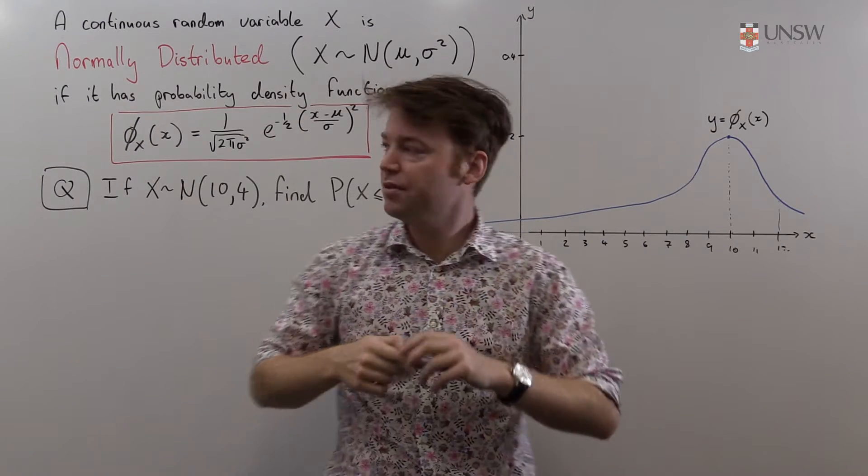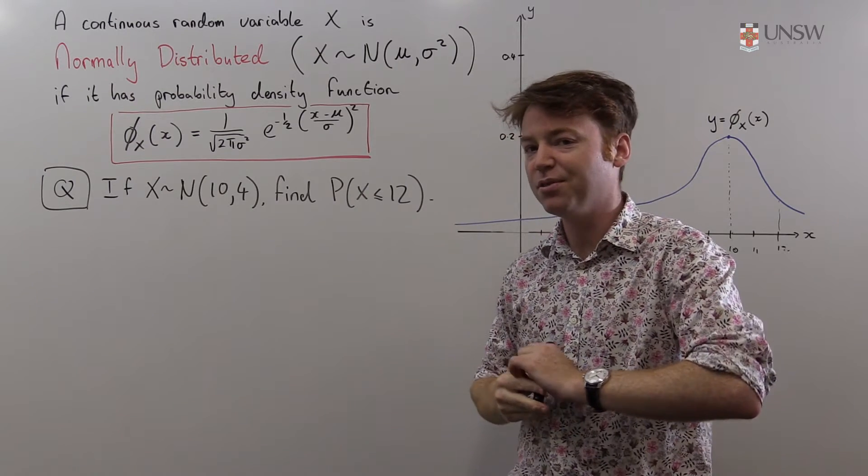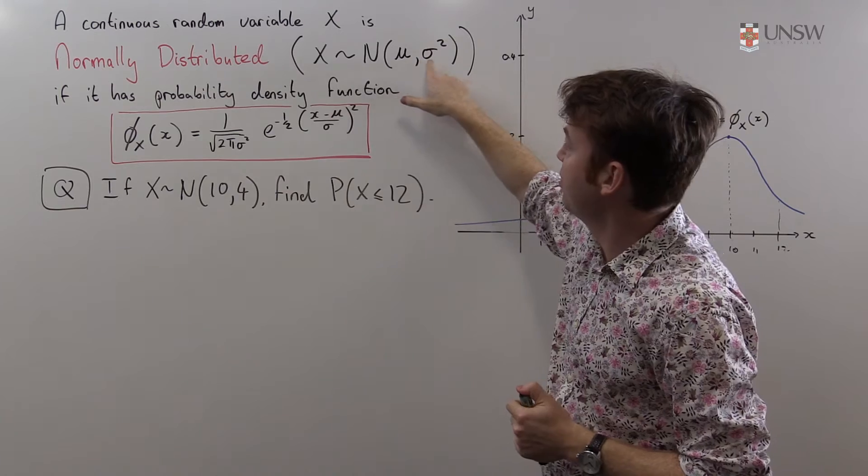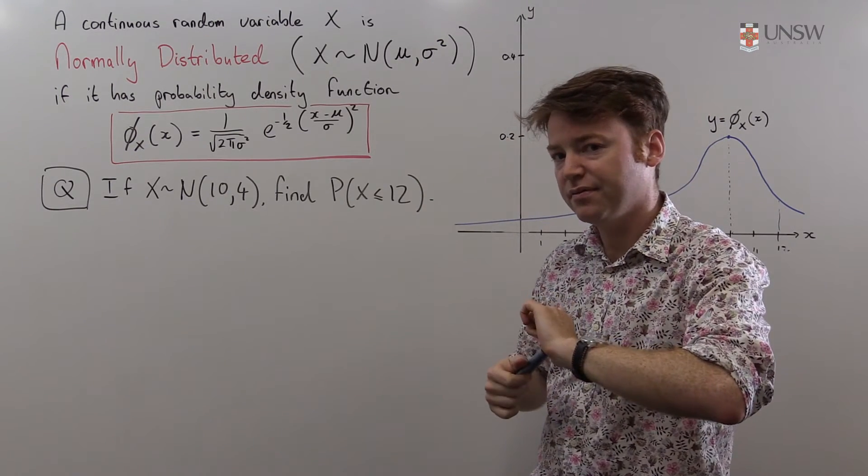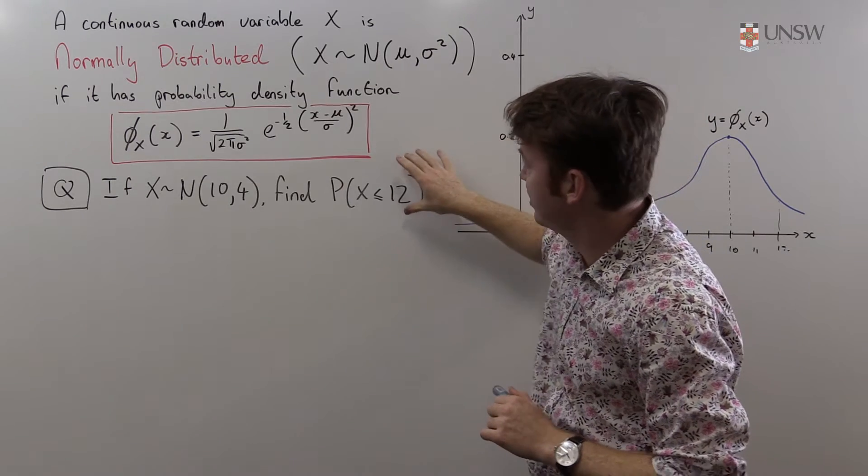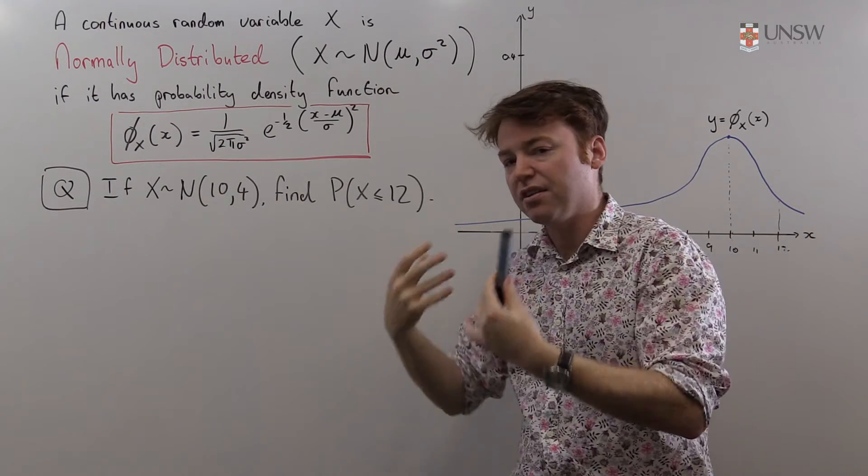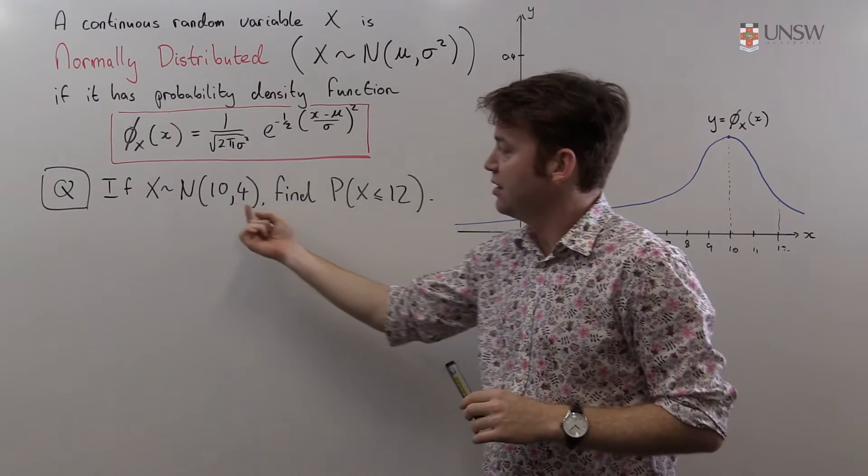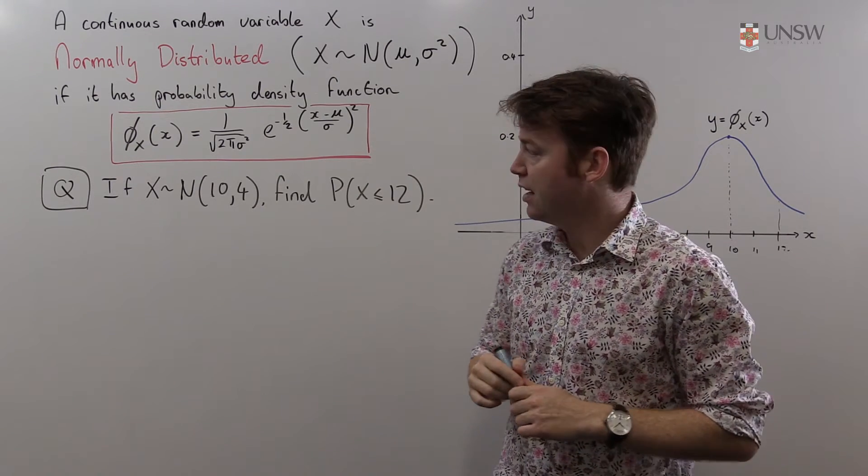There are lots of different possible values for mu and sigma and we only have one lookup table, and that lookup table is when mu is 0 and sigma squared is 1. So we have to convert this question here into a question about a continuous random variable that is normally distributed with expected value 0 and variance 1. And let's do that.